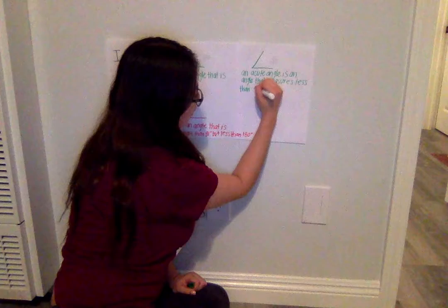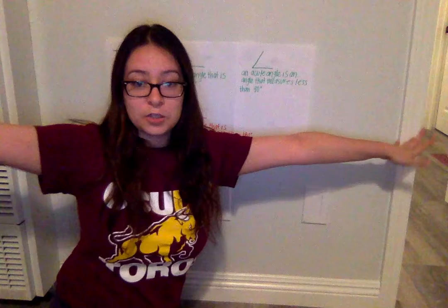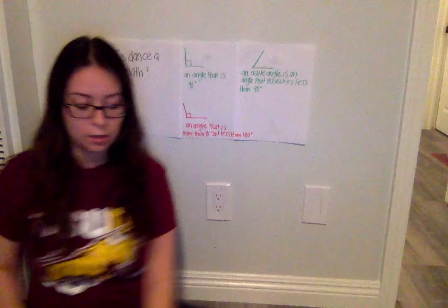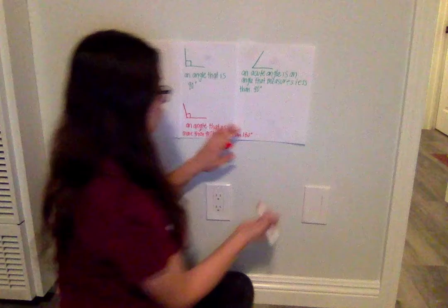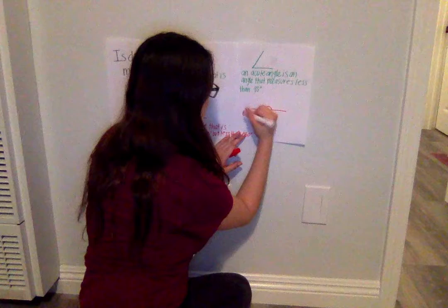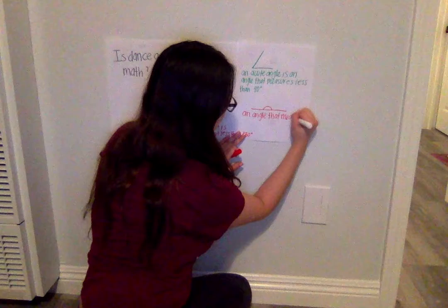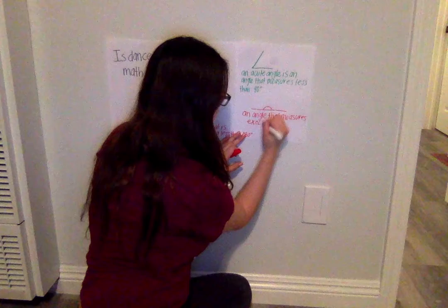And lastly, our last angle is a straight angle, which looks like a straight line. A straight angle is an angle that measures exactly 180 degrees. Go ahead and write down the definition for a straight angle in your notebook — a straight angle looks like a straight line and its definition is an angle that measures exactly 180 degrees.